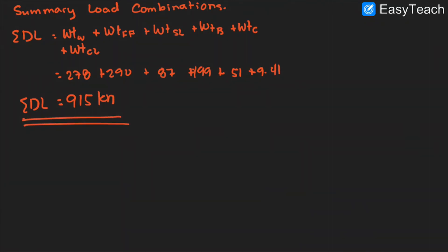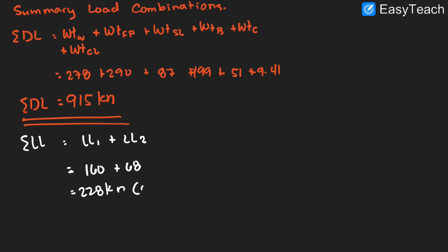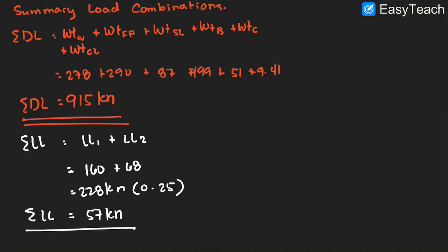For the total live load, it is the summation of live load 1 plus live load 2 with a reduction factor of 0.25. Live load 1 is 160 kilonewton and live load 2 is 68 kilonewton, giving 228 kilonewton for the entire floor system. With a 25% reduction factor, the total live load becomes 57 kilonewton.